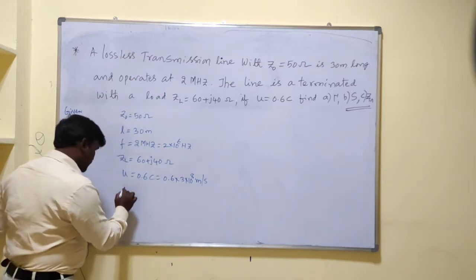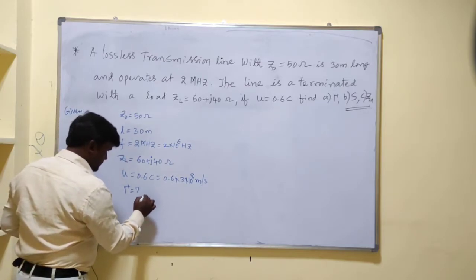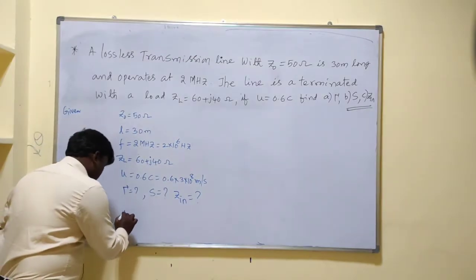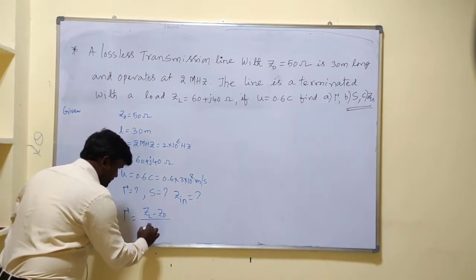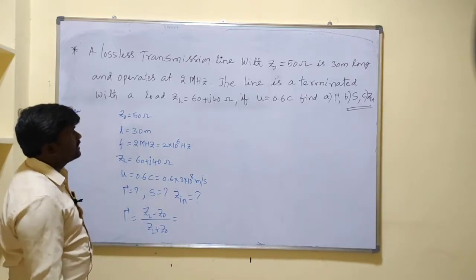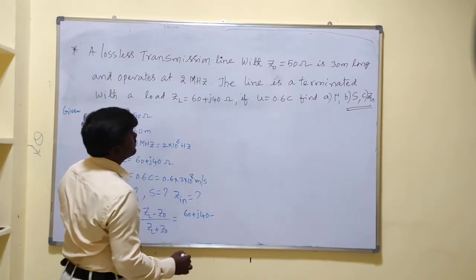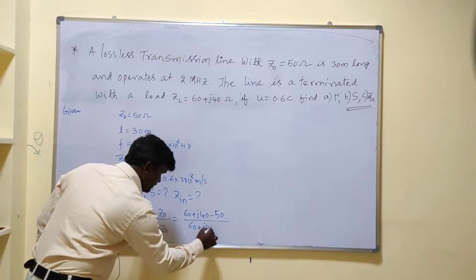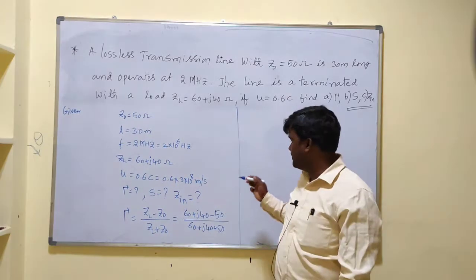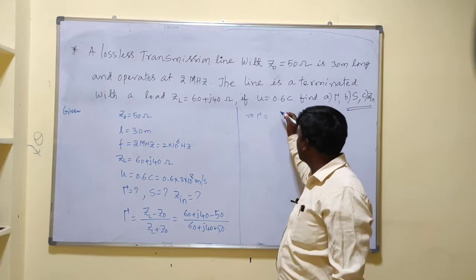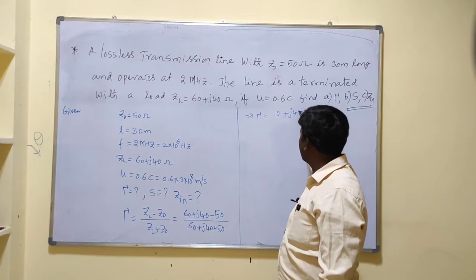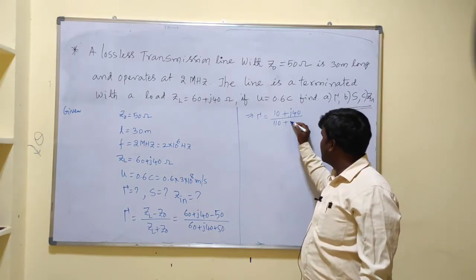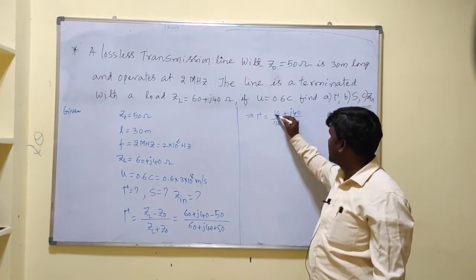Find gamma, standing wave ratio S, and input impedance Zin. First, we can find gamma using the formula: gamma equals ZL minus Z0 divided by ZL plus Z0. ZL is given as 60 plus j40, so the numerator is 60 plus j40 minus 50, which gives 10 plus j40, and the denominator is 60 plus j40 plus 50, which gives 110 plus j40.